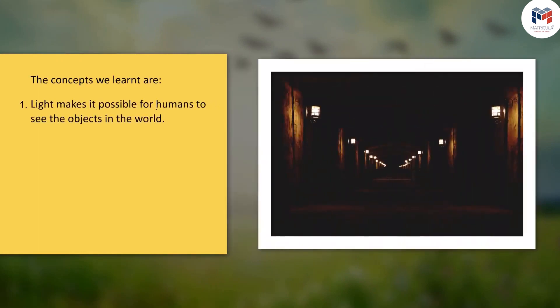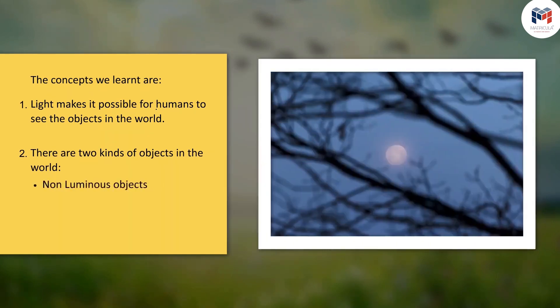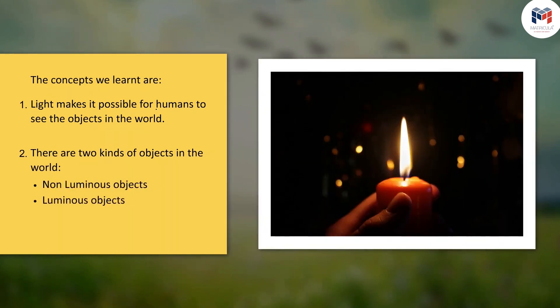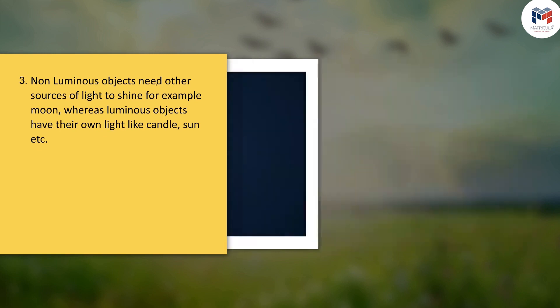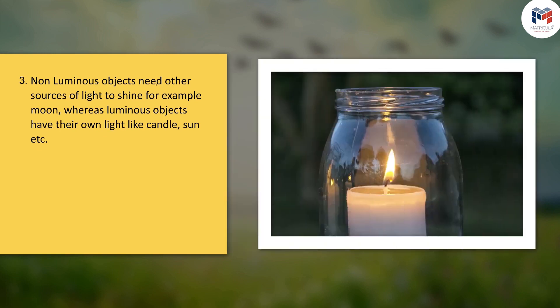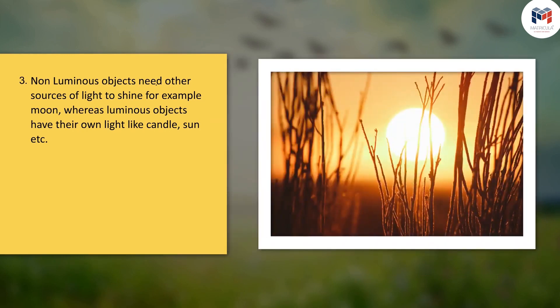The concepts we learnt are: light makes it possible for humans to see the objects in the world. There are two kinds of objects in the world. Non-luminous objects need other sources of light to shine — for example, the moon — whereas luminous objects have their own light, like candles, the sun, etc.